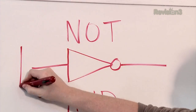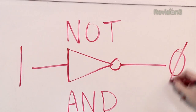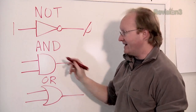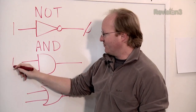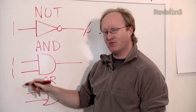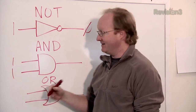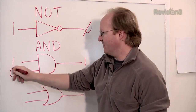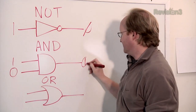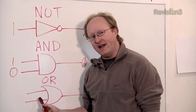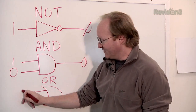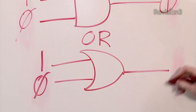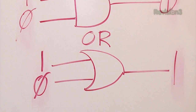A not gate takes an input, like a one, and inverts it, makes it a zero. An and gate requires that this one and this one be one, and then you'll get an output. If one of them is zero, you'll get a zero here. An or gate says if this one or this one is one, we'll give you an output.